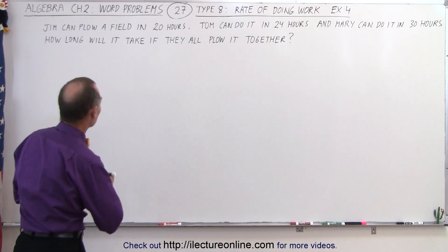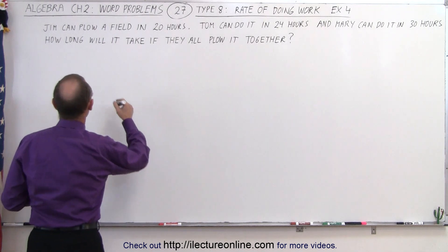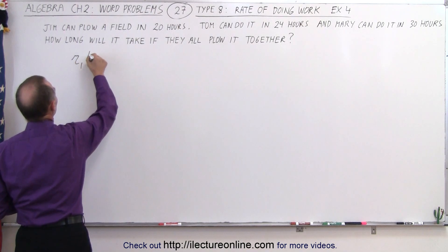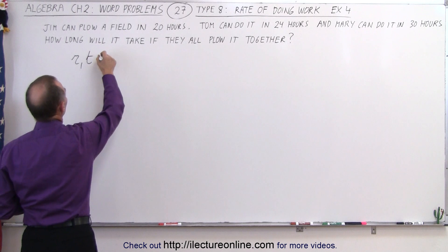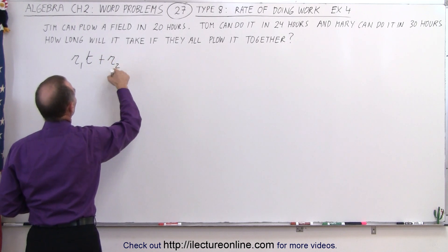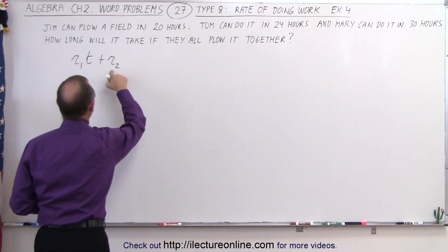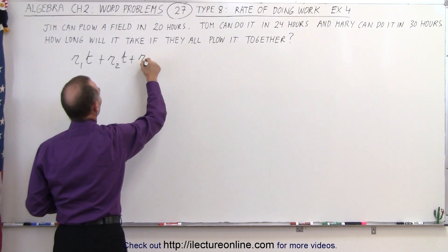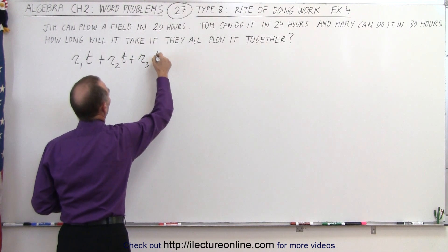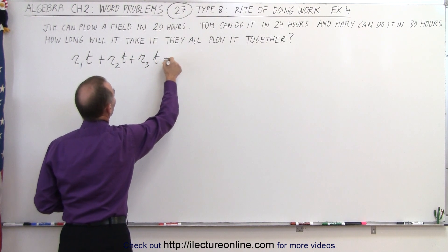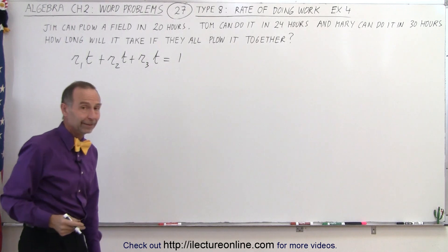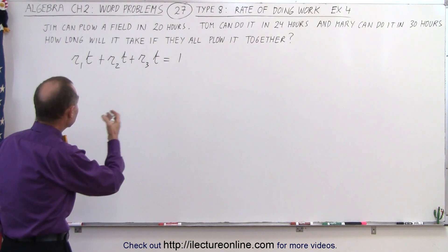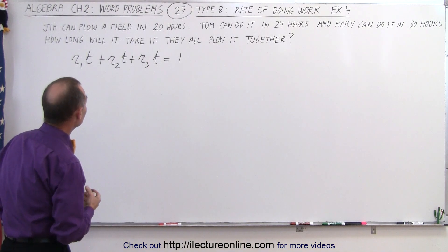Again, the equation we're going to need is as follows: the rate of the first person times the time all three will work together, plus the rate of the second person times the time they all will work together, plus the rate of the third person times the time they all work together, will add up to the whole job being done. So now the question is, what is the rate for each of these three individuals?